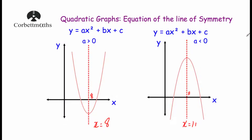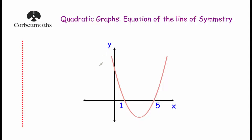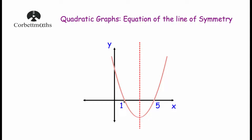Let's have a look at some questions. Here we've been given a quadratic graph, and it crosses the x-axis at the points 1 and 5. We've been asked to find the equation of the line of symmetry. It's going to be a vertical line, and as you can see it's symmetrical - the 1 is the same distance from the mirror line as the 5. So the line passes through the middle, which is going to be 3. It crosses the x-axis at 3, so the equation of this line of symmetry is x equals 3.